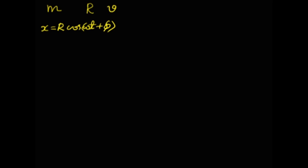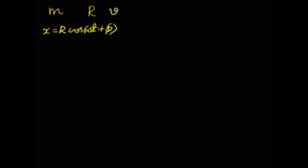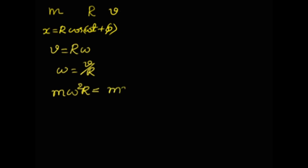Since the body is performing uniform circular motion and its projection is exactly simple harmonic motion, we can use the formula: linear speed v = Rω, therefore ω = v/R. Alternatively, the restoring force in SHM is mω²R, which is balanced by centripetal force mv²/R.